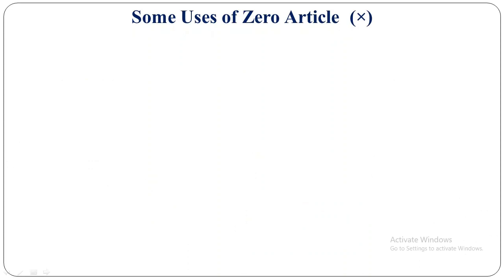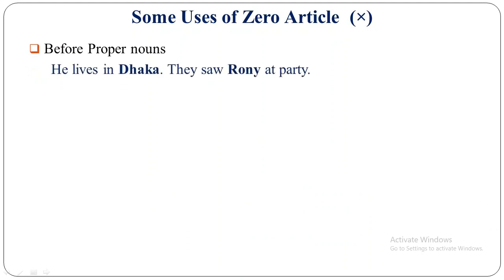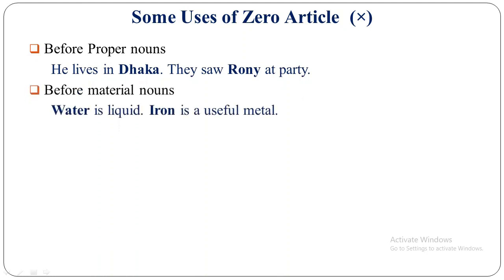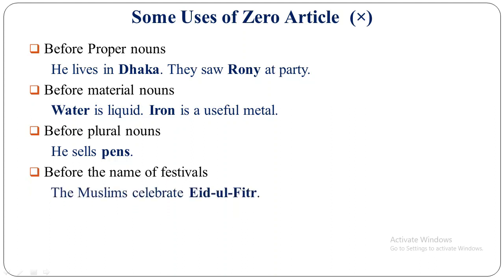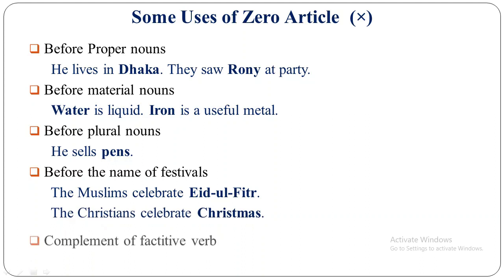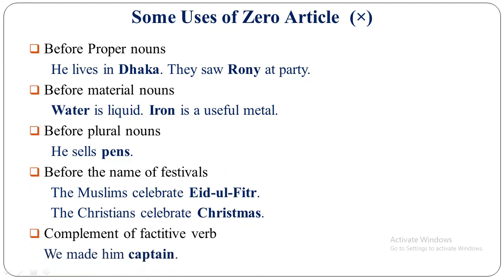Now some rules about zero article — where we should not use articles. Before proper nouns: 'He lives in Dhaka, they saw Rani' — Dhaka and Rani are proper nouns, so no article before them. Before material nouns: 'Water is liquid, iron is a useful metal' — water and iron are material nouns, so no article. Before plural nouns: 'He sells pens' — pens is plural, so no article. Before the name of festivals: 'The Muslims celebrate Eid al-Fitr' — no article before Eid al-Fitr. Complement of factitive verb: 'We made him captain' — no article before captain.